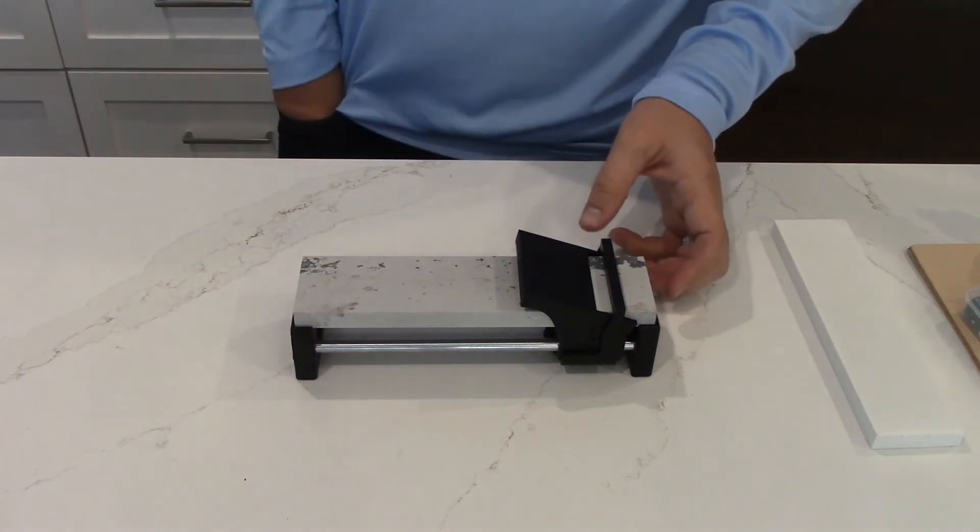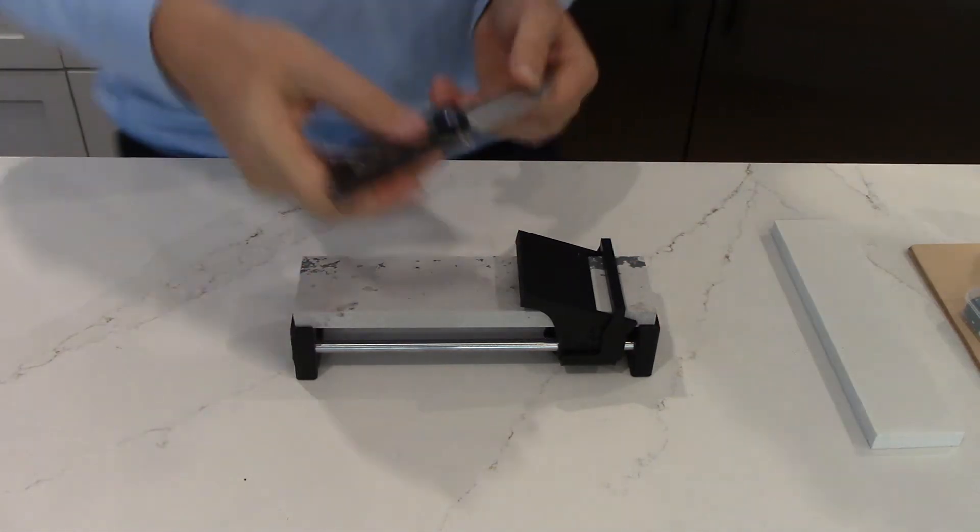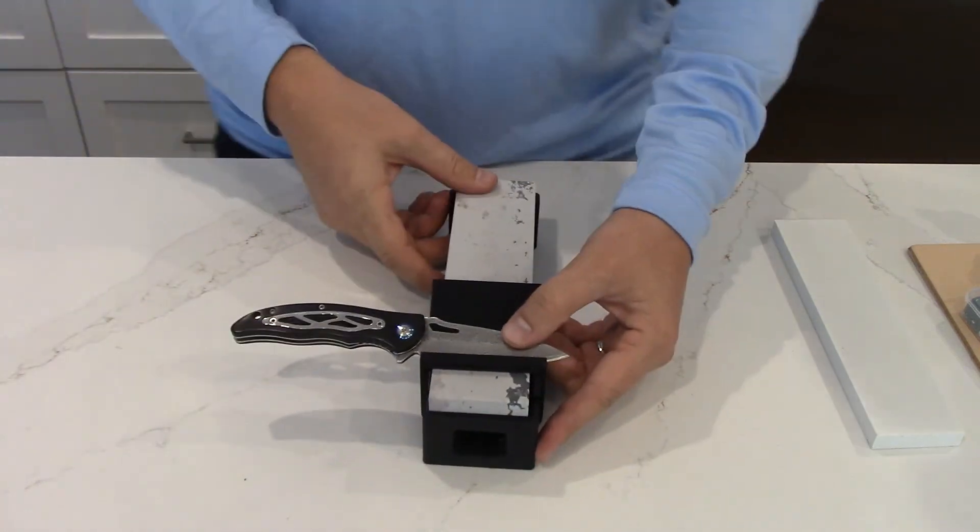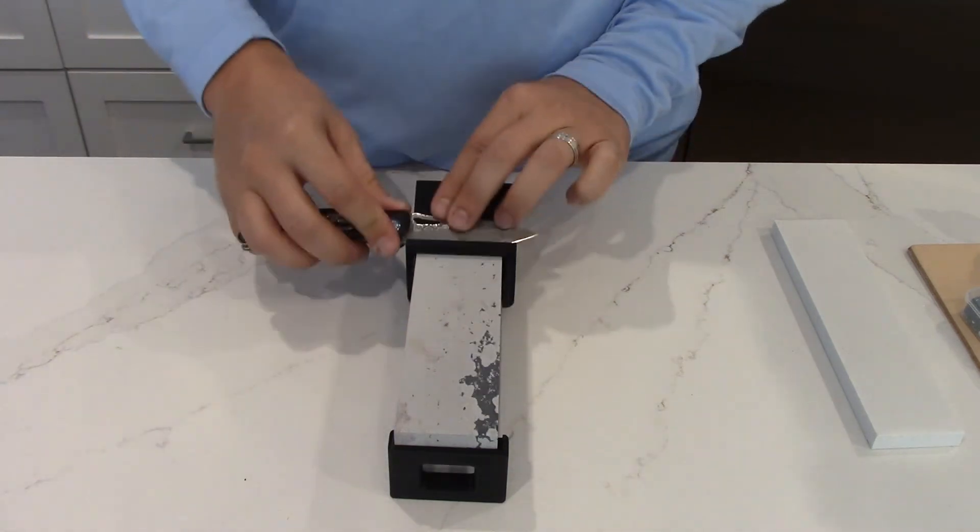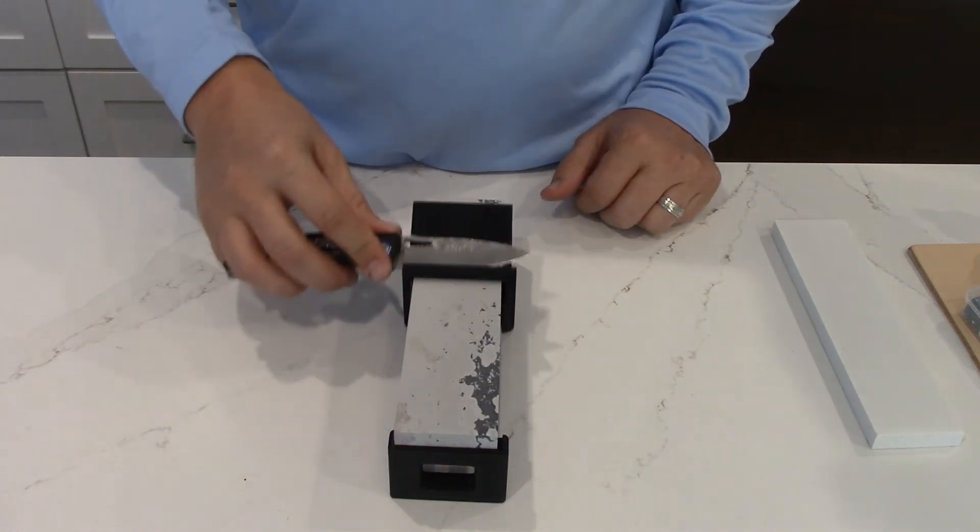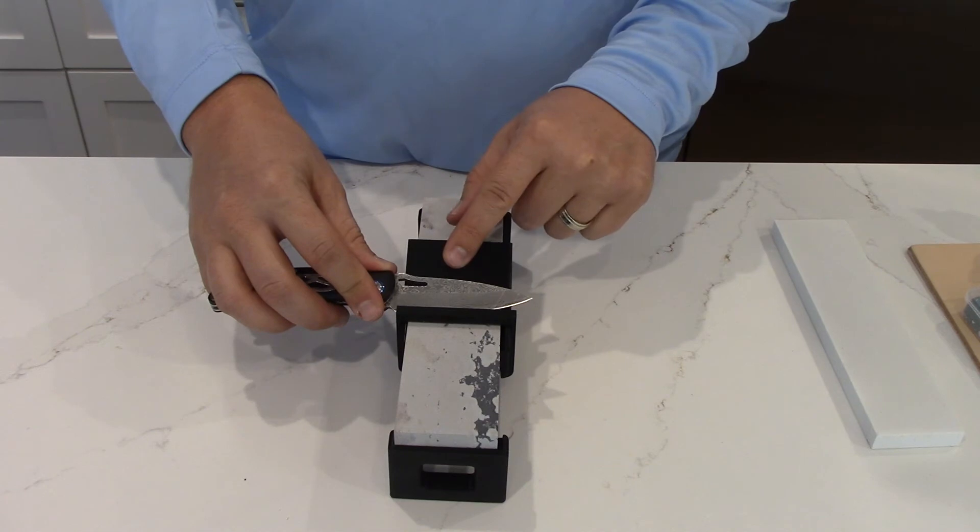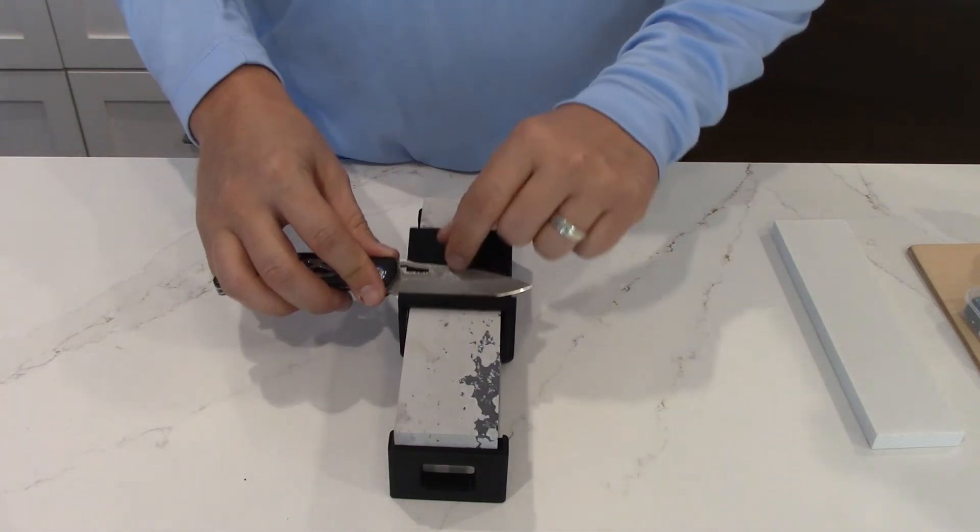And so what the gate does then is you put the knife here, and then you can slide it back and forth. And the magnets hold it against the angle, and the gate prevents it from sliding forward.